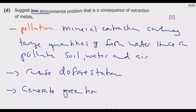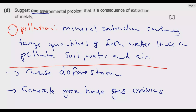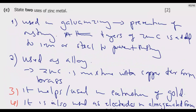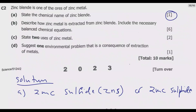A third environmental consequence is greenhouse gas emissions, because large earth machines used in metal extraction run on fuel, and smelting also generates emissions. Out of these three — pollution, deforestation, and greenhouse gas emissions — you can choose one. Once you answer all parts, you would get these 10 marks. Extraction of zinc is a frequent question in chemistry. Thank you for joining me — please join me in the next episode as we look at the last question of this paper.